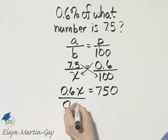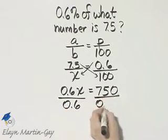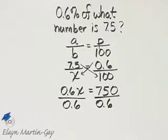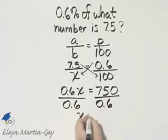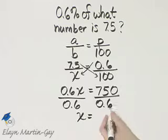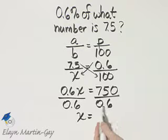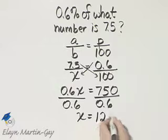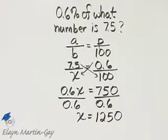Then to solve for x, divide both sides by the coefficient of x, which is six-tenths. The left side I have x. The right side, I'll let you go off to the side and divide this decimal into this decimal. If you do so, you'll have 1,250.